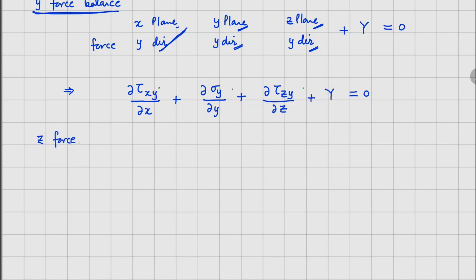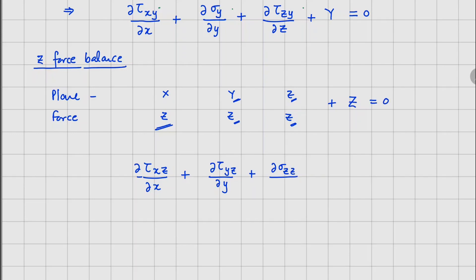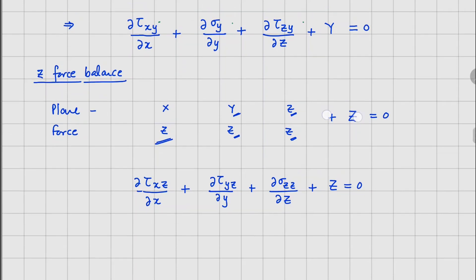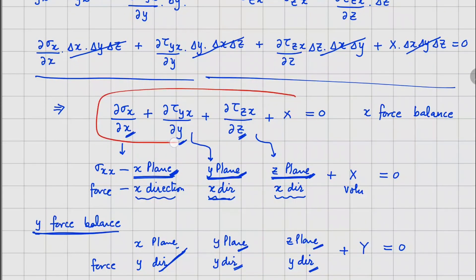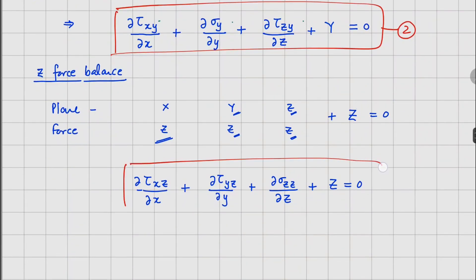For the z-force balance, the planes are again x, y, and z, but the force direction is now always z. First term: x-plane, z-direction stress is tau_xz, derivative with respect to x. Second term: y-plane, z-direction stress is tau_yz, derivative with respect to y. Third term: z-plane, z-direction stress is sigma_z, derivative with respect to z. Plus volumetric force Z equals zero. These are the three equilibrium equations.